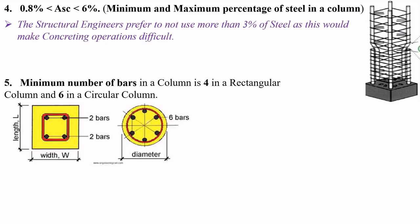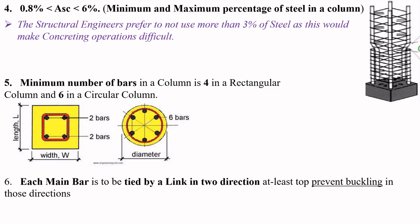The minimum number of bars for a rectangular column is four, and for a circular column it is six. Each main bar needs to be tied with links in two directions to prevent buckling in those directions.